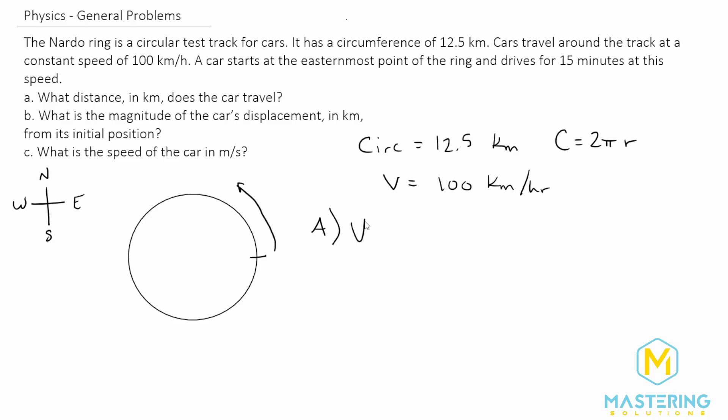So for part A, we'll use the velocity formula, which is equal to change in distance over change in time. And so if we isolate the change in distance, we'll multiply both sides of the equation by t. So change in distance, or change in x, which is the same thing, is equal to velocity times change in time. Now, before we plug in our numbers, we need to convert our time because they say that delta t is 15 minutes. But 15 minutes is a quarter of an hour, so 0.25 hours.